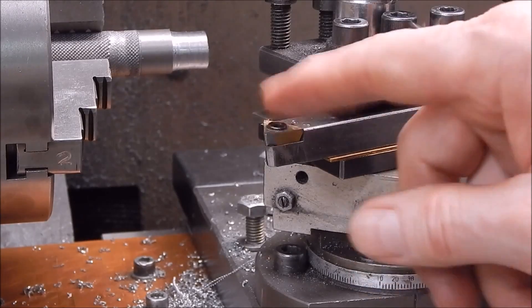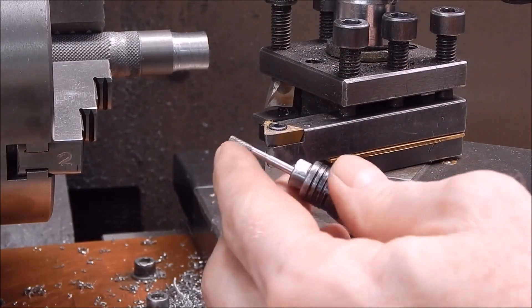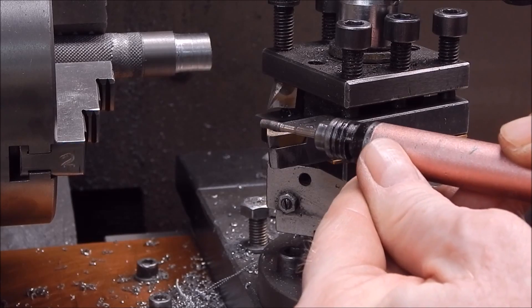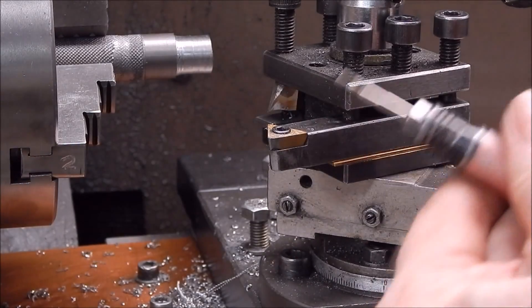To put a chip breaker on these again, what you can do is use a diamond burr, cylinder burr, in a pencil grinder, just put a little depression at the back of the cutter.